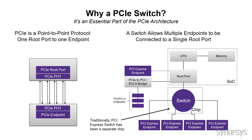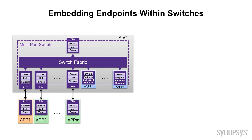What we're talking about today for the advantages of using an embedded endpoint is really geared toward when you decide you're building an application with an embedded switch. On the left, you see an SOC with an embedded switch. I've got some applications that are running externally on their own chips, labeled App1 through AppM, and they communicate via an external link via a PHY. So we go through the PCI Express protocol on each of these links.